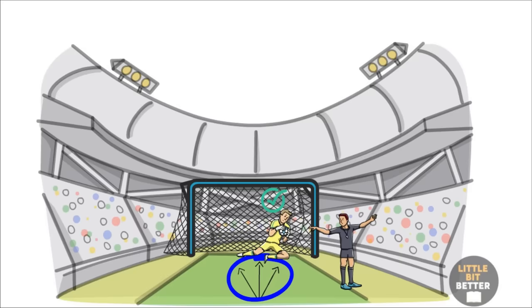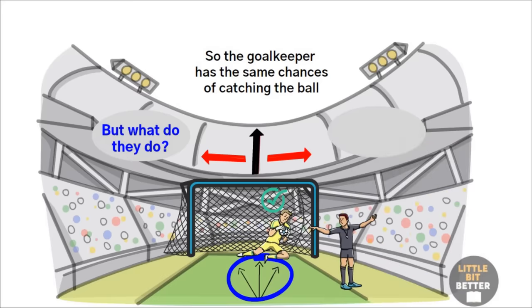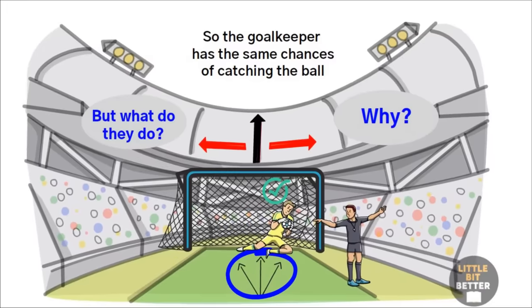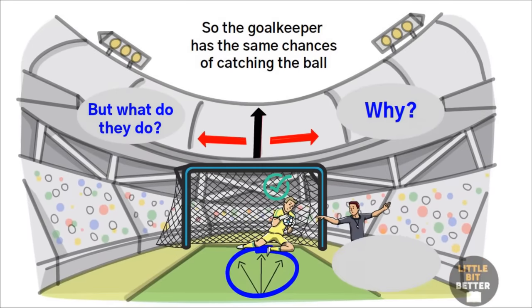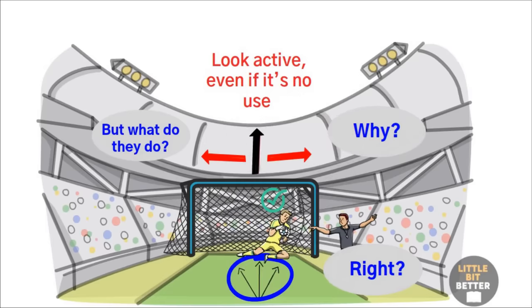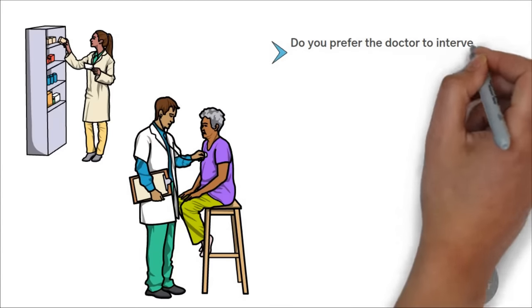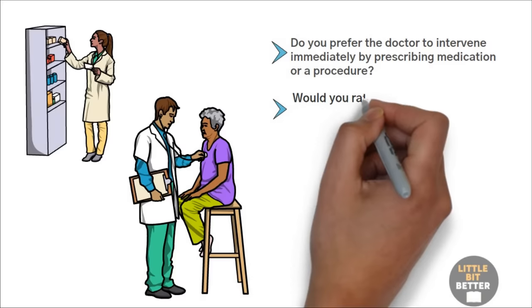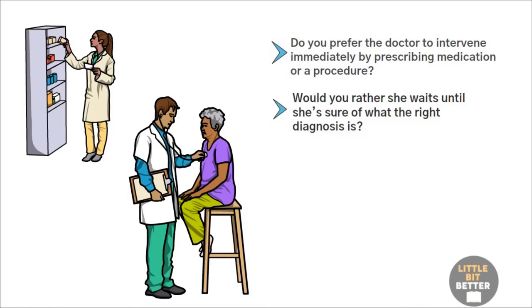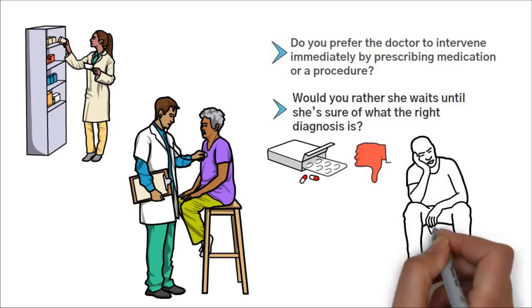The thing is, sometimes the player who kicks the ball might aim for the middle, right? So the goalkeeper has the same chances of catching the ball either if they dive to the left or the right, or if they still stand in the middle. But what do they do? They jump. Why? Because it looks more impressive if they move, even if to the wrong side. At least they tried, right? This is the action bias. Look active, even if it's no use. We fall for this bias in medicine too. Suppose you're sick and your doctor has no idea what's going on. Do you prefer the doctor to intervene immediately by prescribing medication or a procedure? Or would you rather she waits until she's sure of what the right diagnosis is? Most patients will request medication right away, even if it's not sure it'll help. We humans would rather do anything but sit and wait in the face of uncertainty.